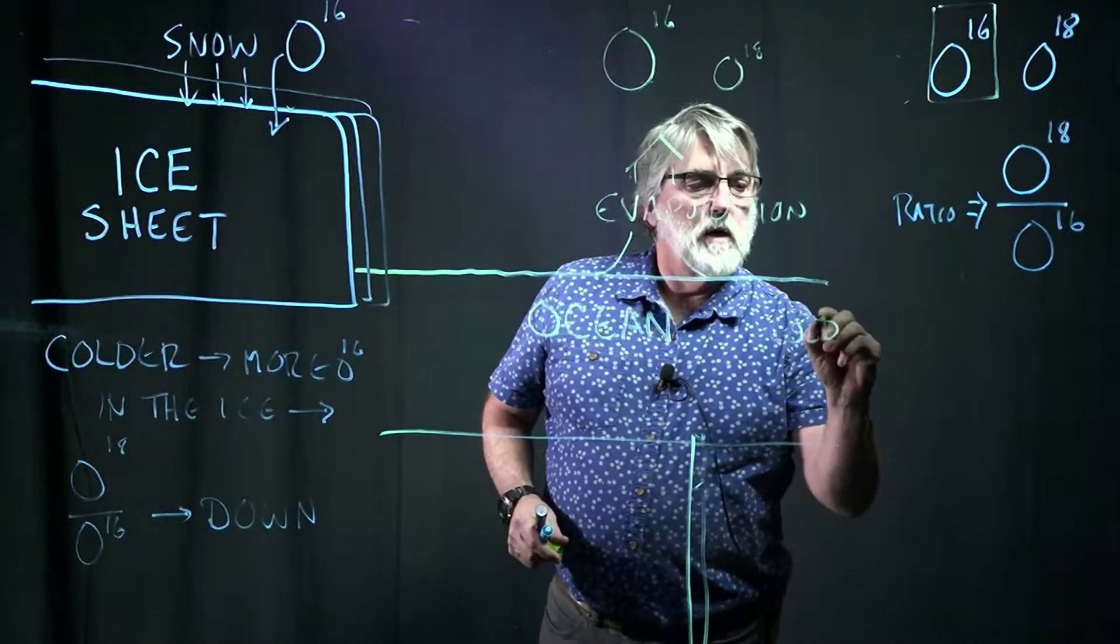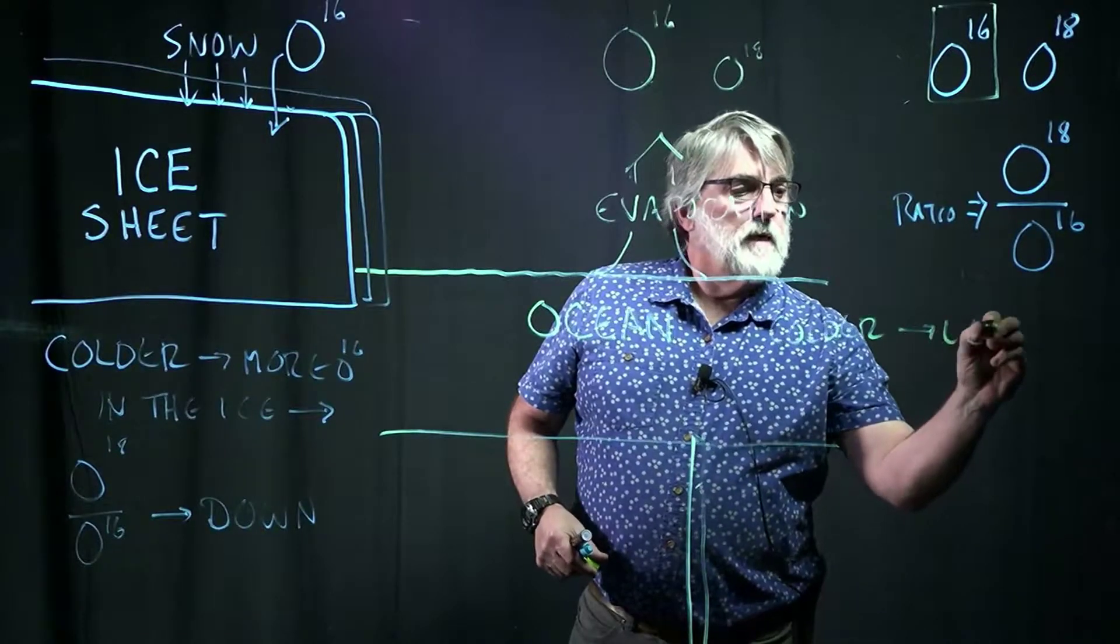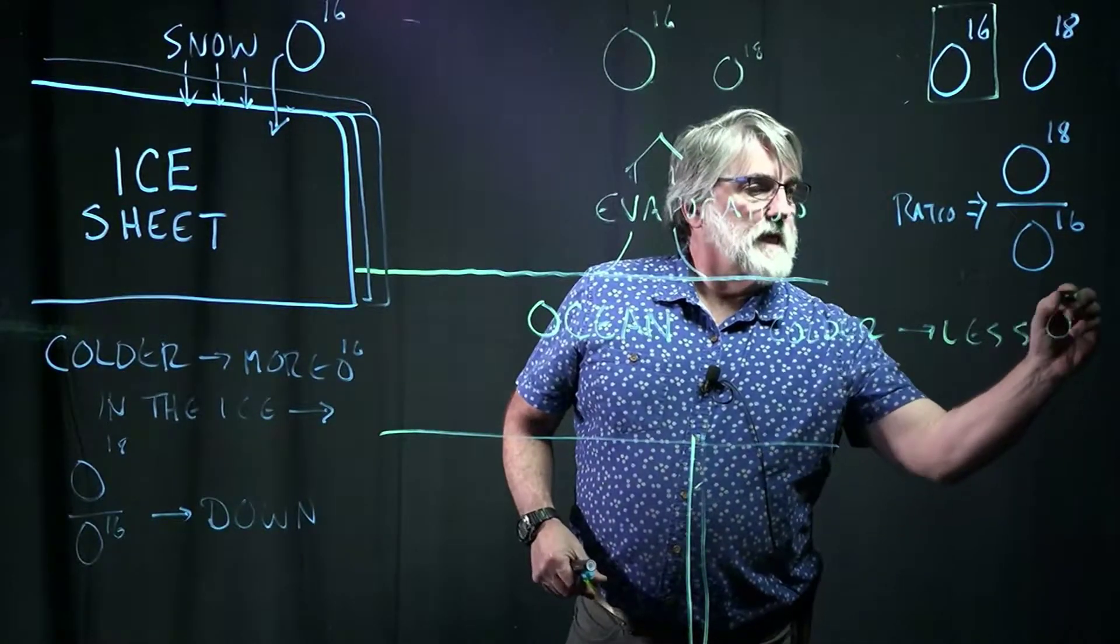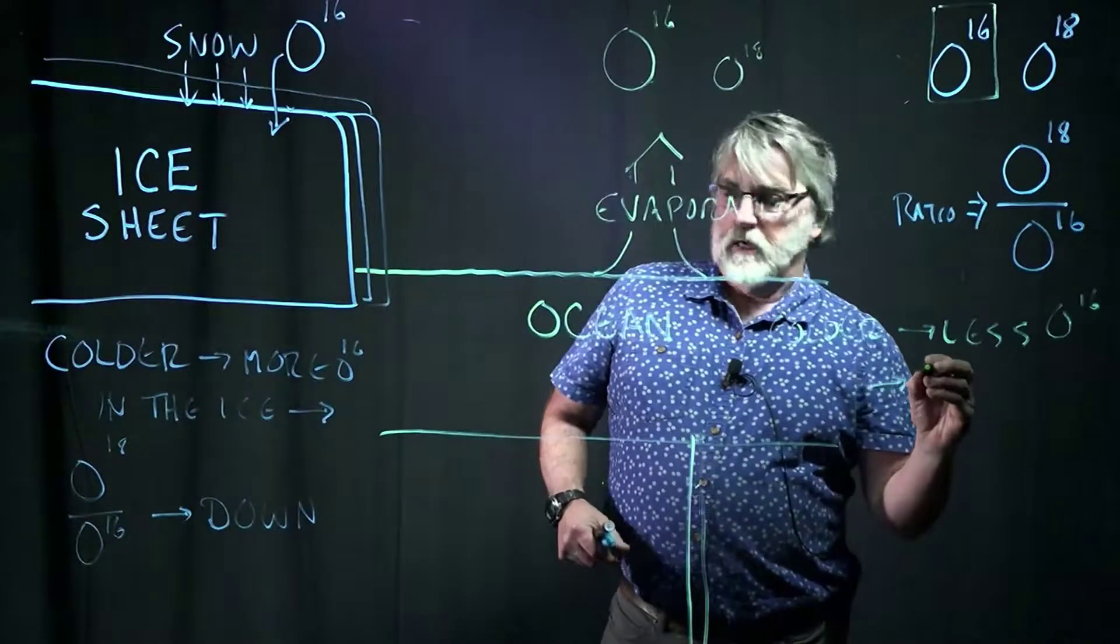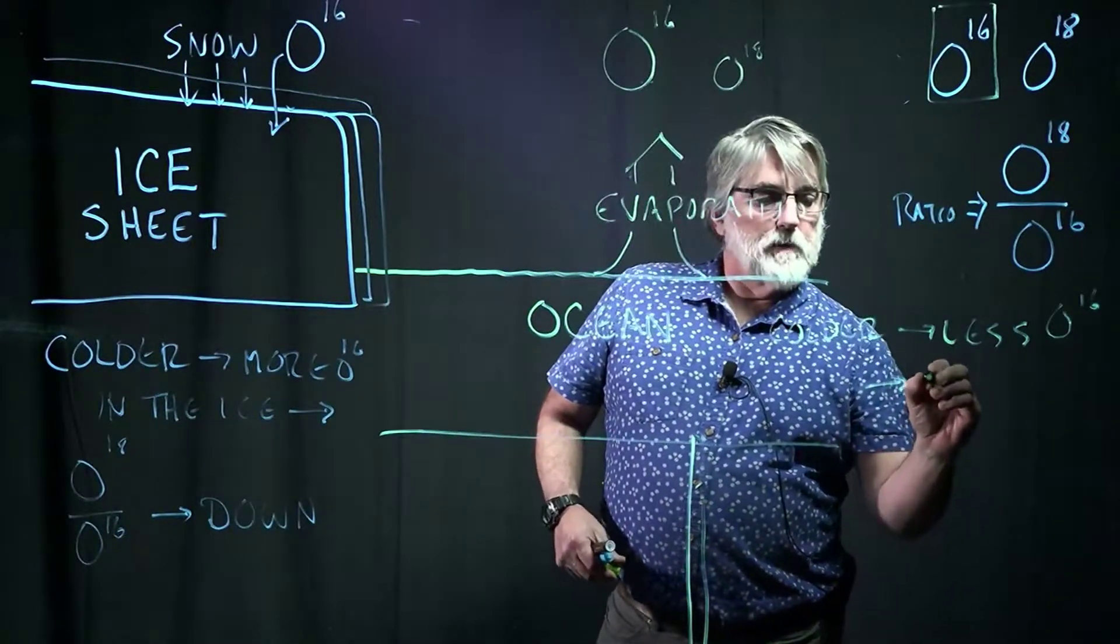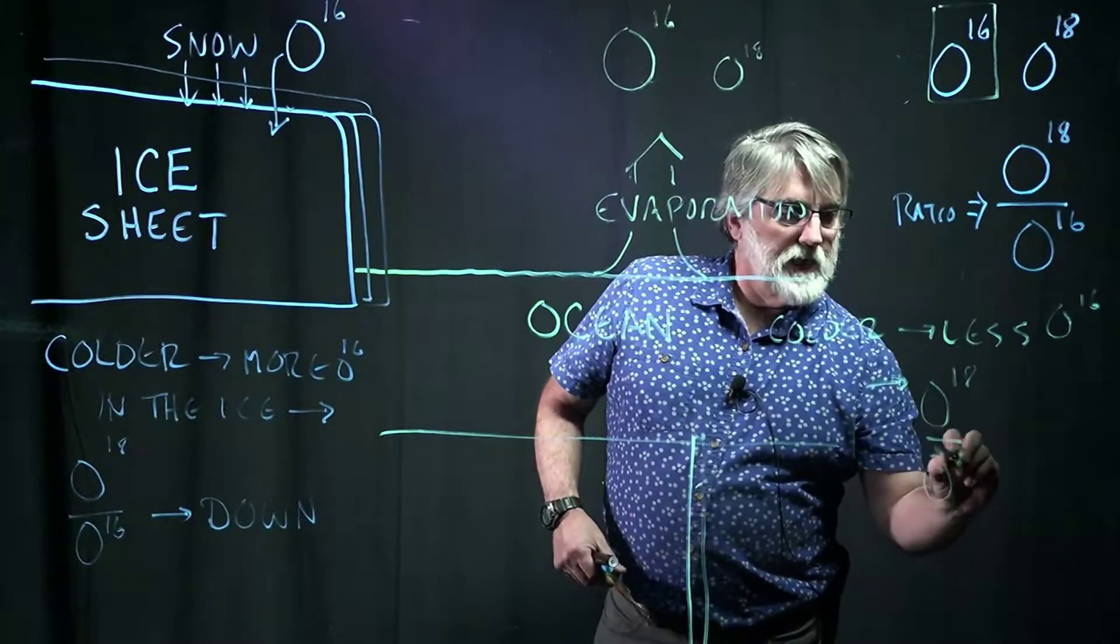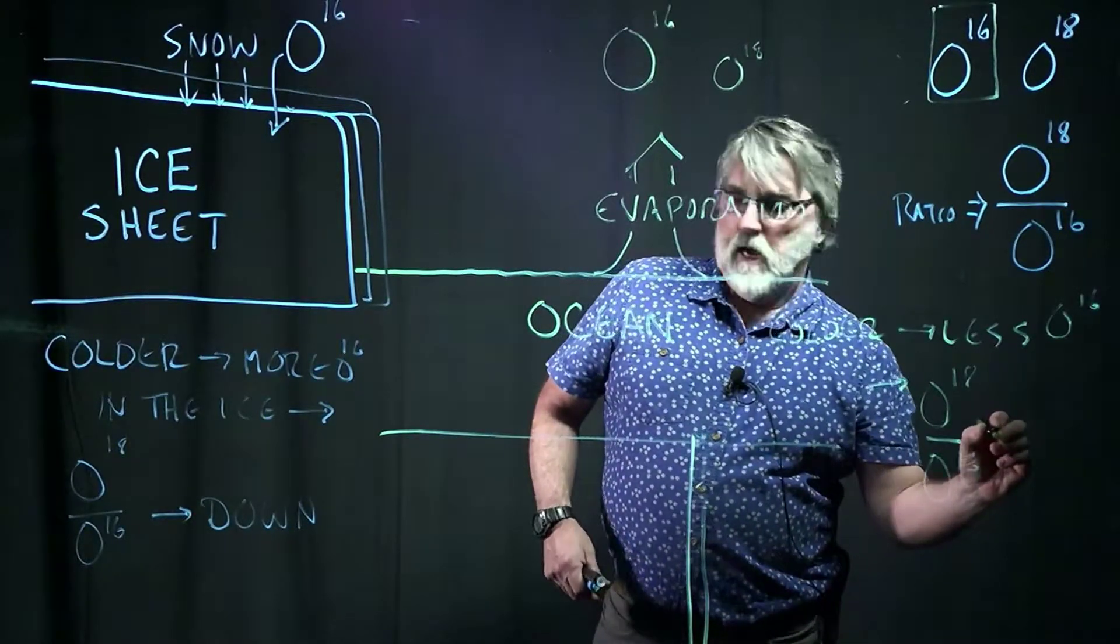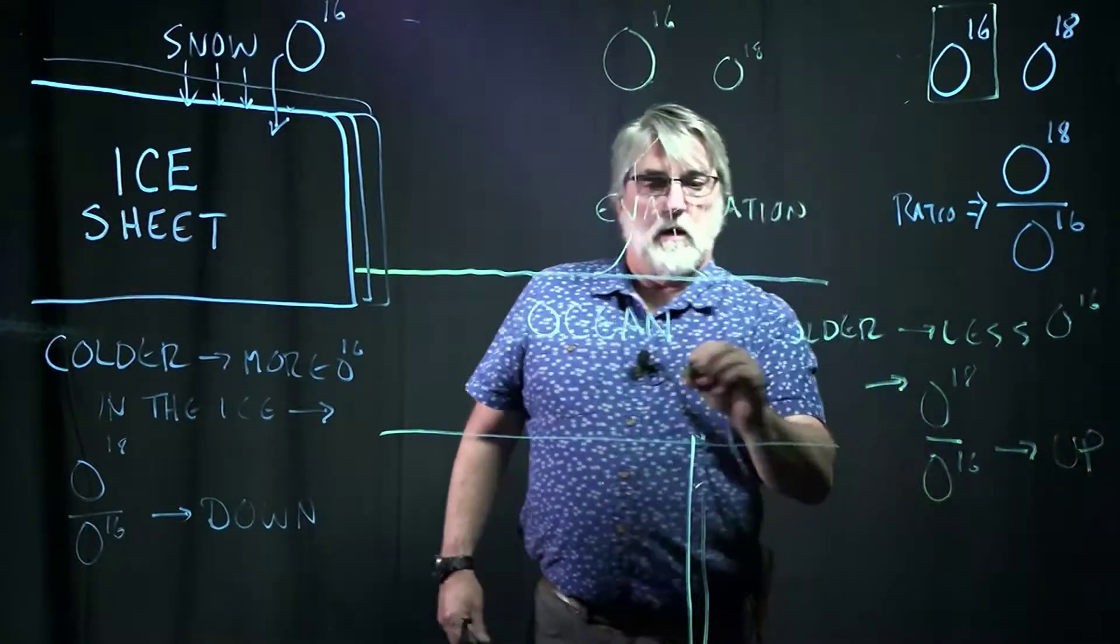So when it gets colder in the oceans, then there is less O16, which means this ratio, O18 to O16, because there's less of it, goes up in the seawater.